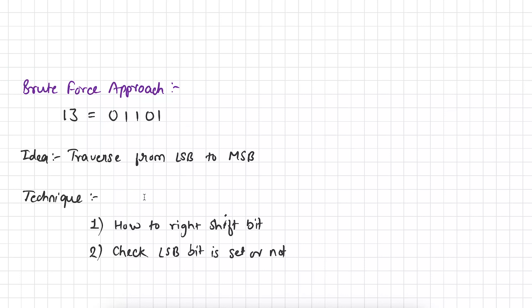If the bit is not set, we simply ignore it. In this approach, we are going to use two techniques. The first technique is how to right shift a bit — we use the right shift operator, which we have discussed in previous videos. The second technique is how to check if the LSB is set or not. We simply do bitwise AND with 1. If we get a number not equal to 0, it means the LSB is set.